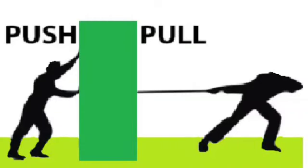Chapter 6: Force. In shot put competition, the competitor wants to throw the shot put in such a way that it covers the maximum distance. For that, he has to throw the shot put with great force.